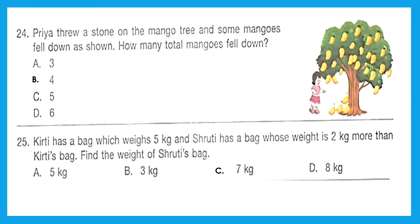Question 24: Priya threw a stone on the mango tree and some mangoes fell down as shown. How many total mangoes fell down? So we have to simply count it: one, two, three, and four. Right answer is option B, four. Question 25: Kirti has a bag which weighs 5 kg and Shruti has a bag whose weight is 2 kg more than Kirti's bag. Find the weight of Shruti's bag. Very simple. Shruti's bag would be 2 kg plus 5 kg, that is 7 kg. Right answer is option C, 7 kg.